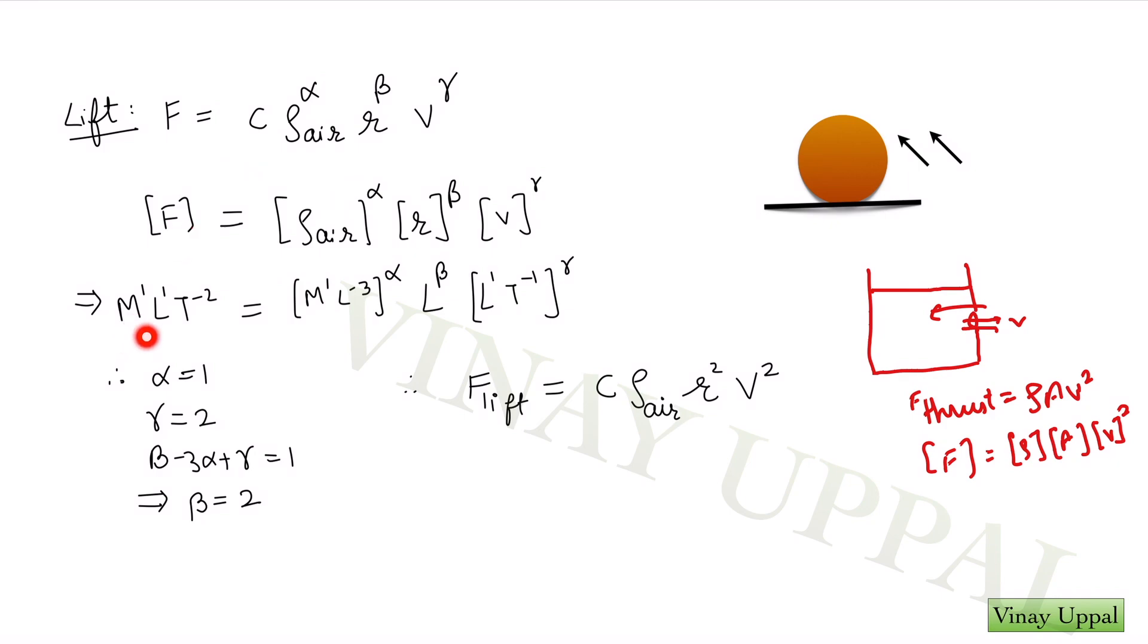Force would be M¹L¹T⁻². This is a very standard expression you should all know about it. Density of air would be mass divided by volume, so M¹L⁻³. Radius would be L, speed would be length by time, so L¹T⁻¹, and then you just compare the powers for each quantity.